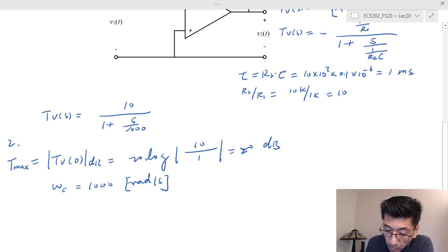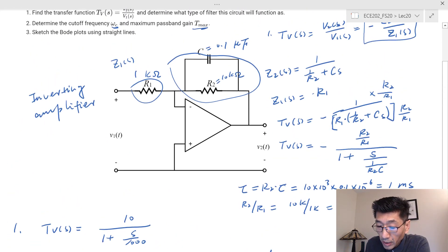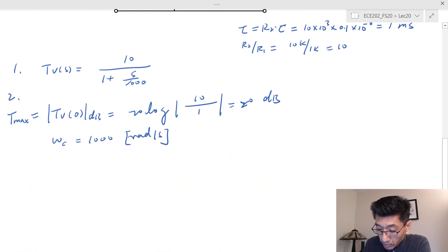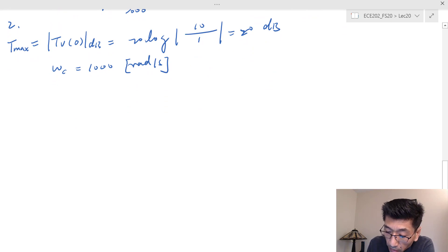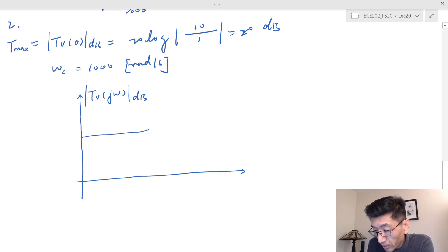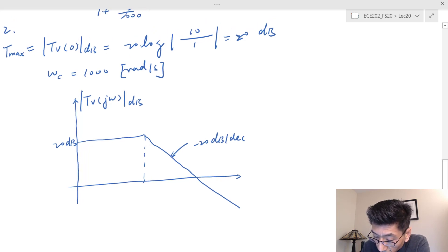For number three, we're going to sketch the Bode plots using straight lines. Let's sketch the gain plot. We have TV(jω) in dB. At low frequency we know that's going to be 20 dB constant, so this is 20 dB. At high frequency there's going to be negative 20 dB per decade slope. The corner frequency here would be 1000, omega_c, which is 1k radians per second.